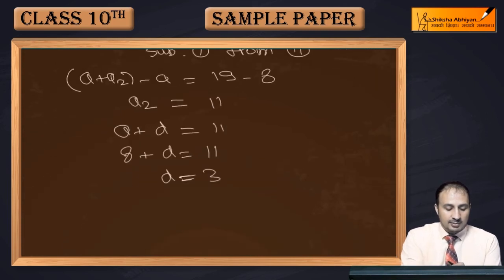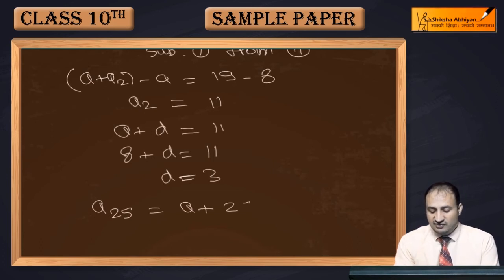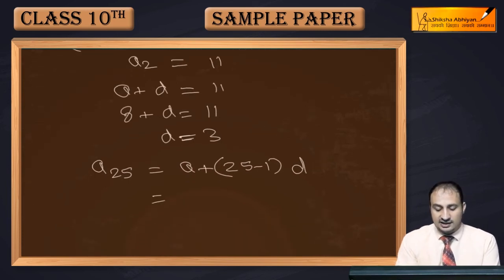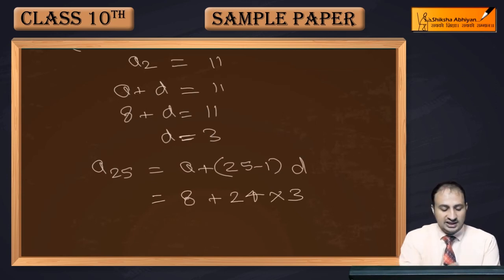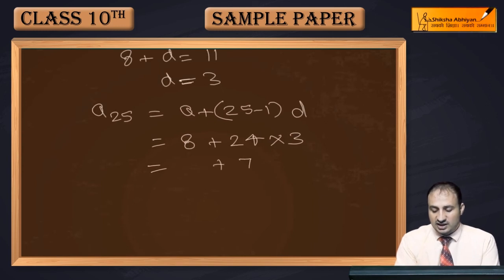Now we can find the 25th term. a₂₅ = a + (25−1)×d = a + 24d. Substituting a = 8 and d = 3: 8 + 24×3 = 8 + 72 = 80. So the 25th term is 80.